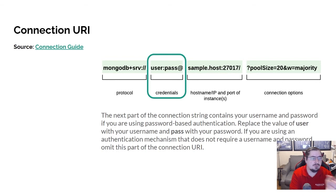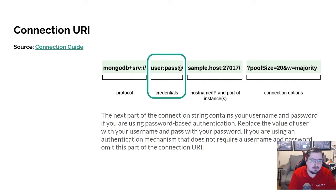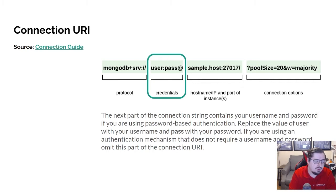You'll notice the credentials are part of the URL, whereas with MySQL they were kind of separate pieces of data stored separately. With MongoDB and these URLs, they pack a lot of those things that we had as separate fields all into this one URI. That means that the URI is oftentimes something you need to keep safe, because it does contain that password.